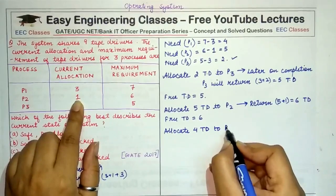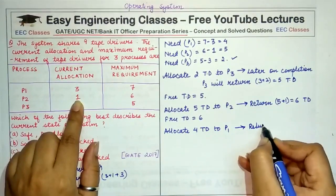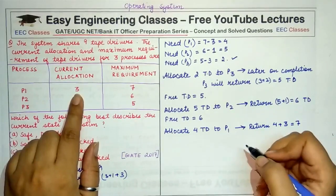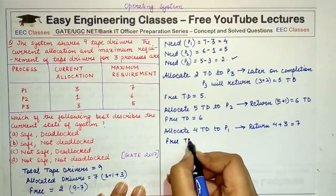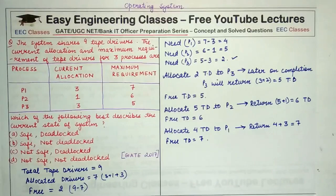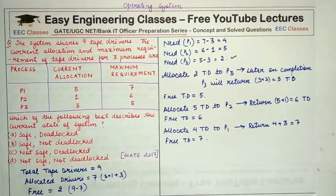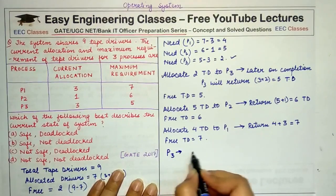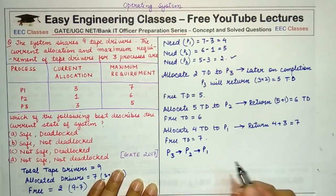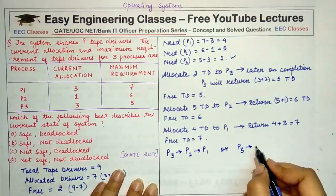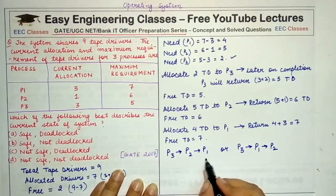With six free tape drivers, P1 needs four to complete. We allocate four drivers to P1. When P1 completes, it returns those four plus the three initially allocated, returning seven tape drivers. The safe sequence followed was P3 → P2 → P1. You could also choose P3 → P1 → P2. This confirms the system is in a safe state.